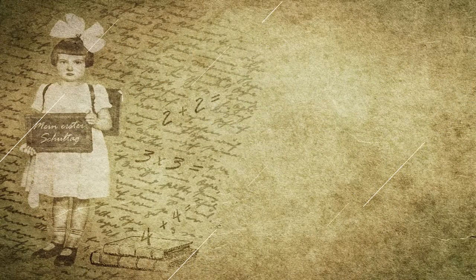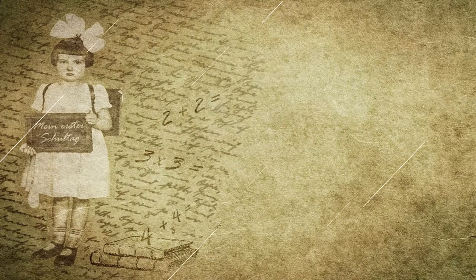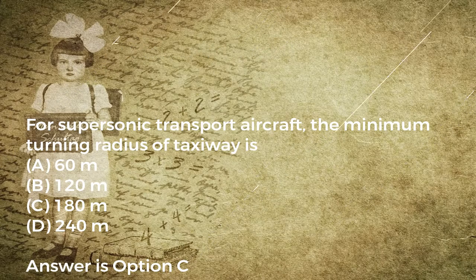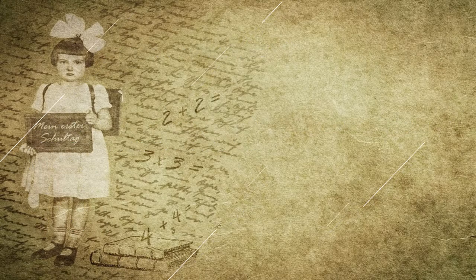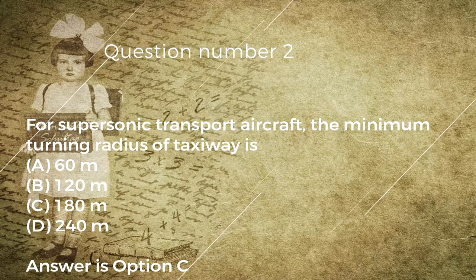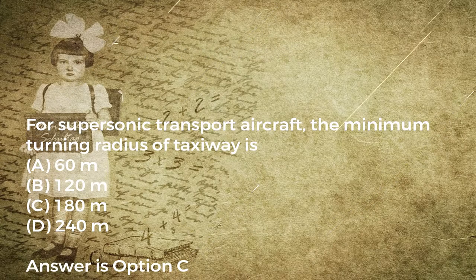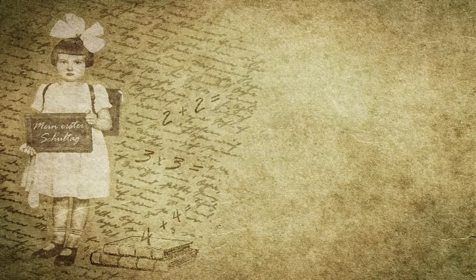Question number two: for supersonic transport aircraft, the minimum turning radius of taxiway is: A) 60 M, B) 120 M, C) 180 M, D) 240 M. Answer is option C.